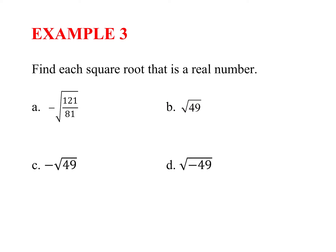Some have negatives, and we'll figure out what to do with those. When I have a fraction, the negative stays out front. For a fraction, it's like doing the square root of the top number over the square root of the bottom number. Keep the negative — the square root of 121 is 11 and the square root of 81 is 9. Leave your answer as a fraction. For part B, the square root of 49 is 7. The negative square root of 49 would be negative 7.